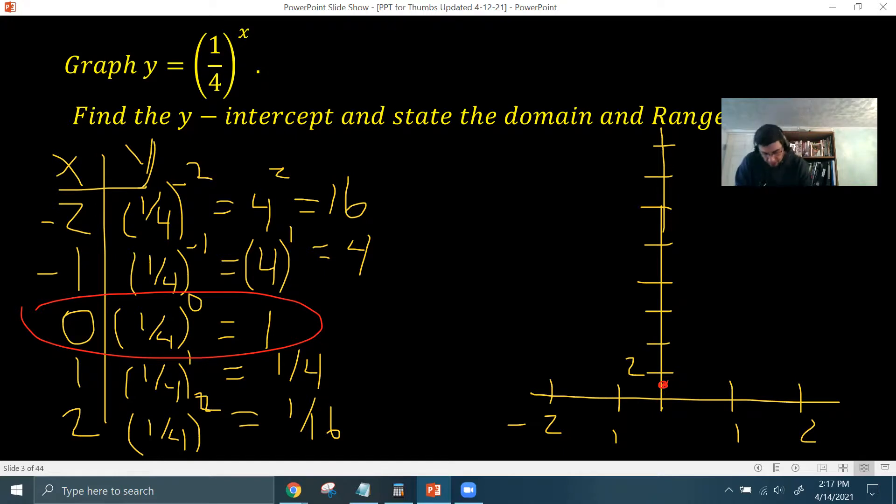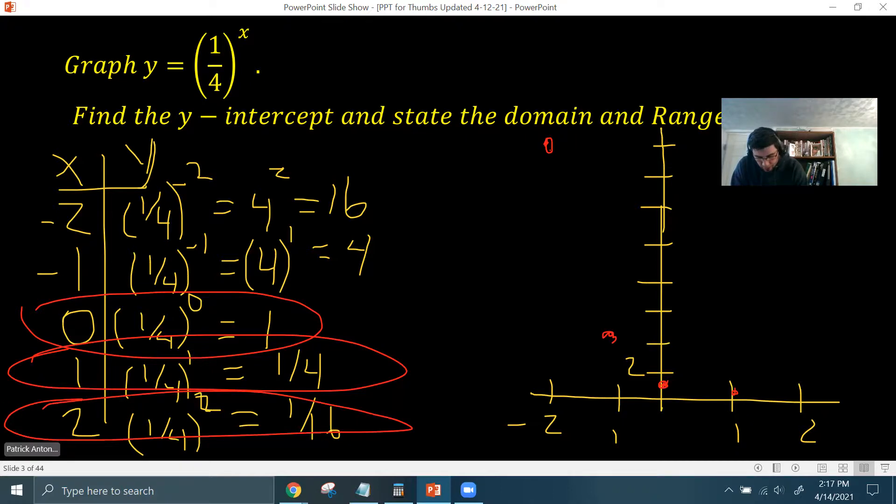And then when x is negative 2, the y value is way up here at 16. When it's negative 1, the y value is 4, which is right there. When x is 1, I'm right here on the table, the y value is 1/4, really close. And then when x is 2, the y value is 1/16, really close to the x-axis. So your graph is going to curve and look like it levels off right on the x-axis. Okay, you can probably draw it a little bit closer. It's hard to draw very accurately with my finger on the iPad.